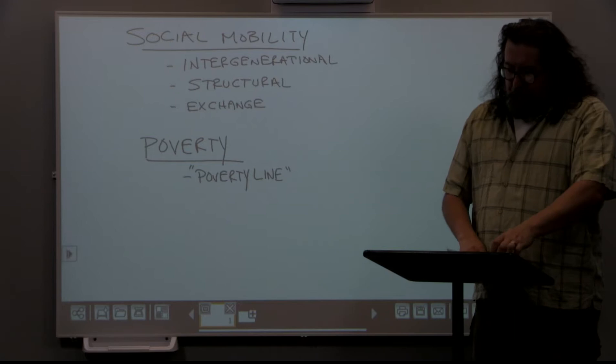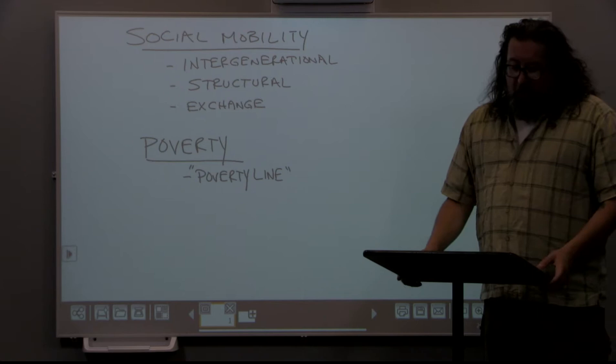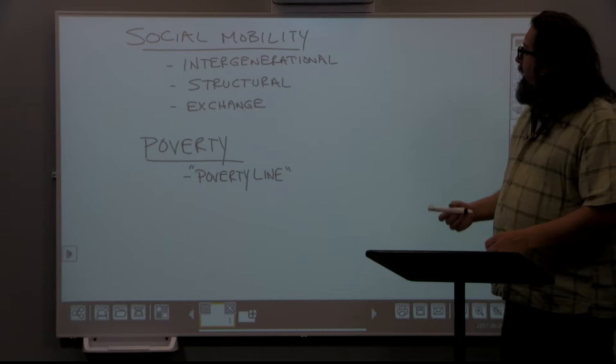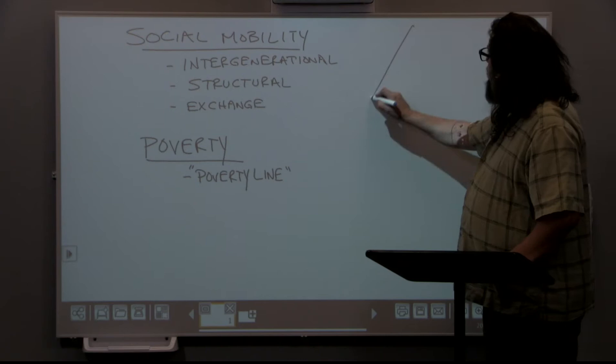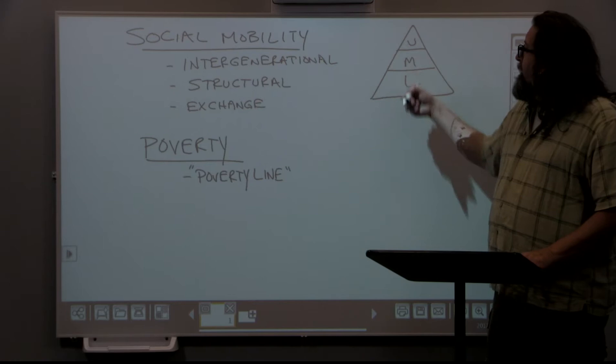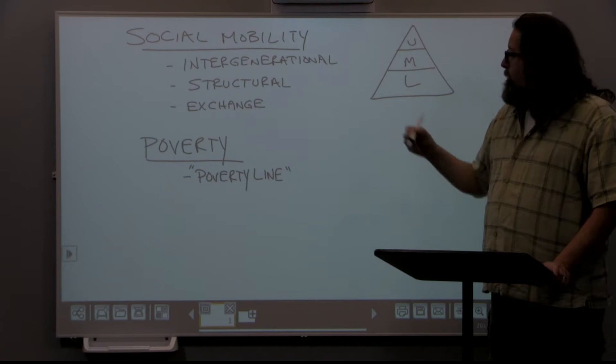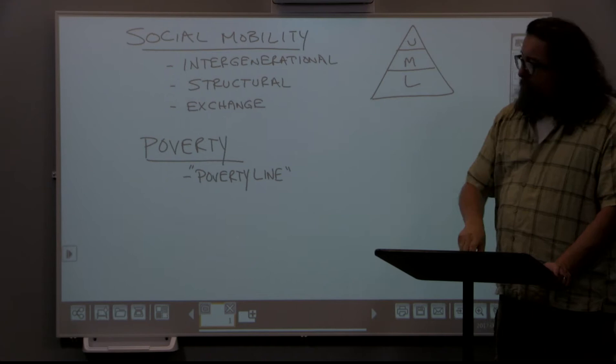The last two topics in this lecture are social mobility and poverty. As we discussed when defining what a class society is, a class society allows for movement between the classes. In our basic triangle depiction with upper, middle, and lower classes, movement between these classes is not only possible but is a goal of many people. The general goal is to move upward, from lower class to middle class and from middle class to upper class.